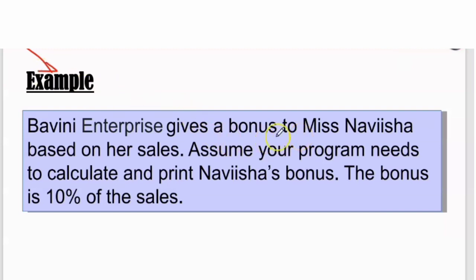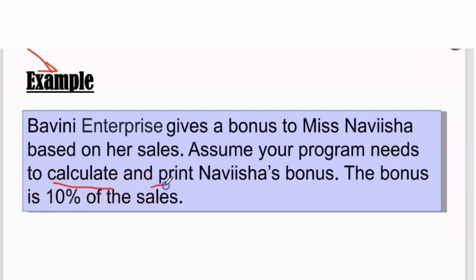Let's look at an example. Read the question: assume your program needs to calculate and print Navisha's bonus. The bonus is 10% of the sales. Bowery Enterprise gives a bonus to Miss Navisha based on sales. Your program needs to calculate and display Navisha's bonus, which is 10% of the sales.